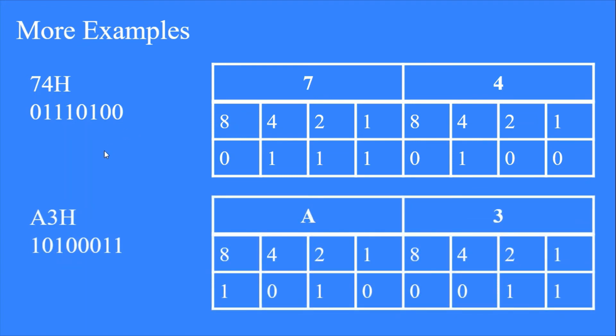And A3h. A is 10 and 3. Decimal number 3 is same in hexadecimal as well. So for 10, what makes 10? 8 plus 2 makes 10. So under these place values put a 1, and the rest of the place values put a 0. So when you try breaking down like this, it is very easy. Hexadecimal conversion to binary is very simple. So I hope you understood this conversion process by now.